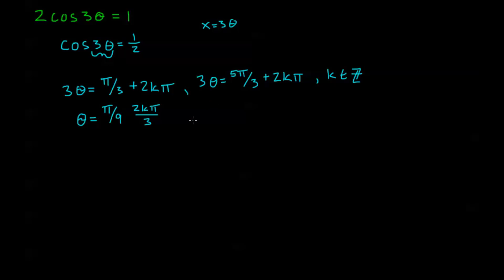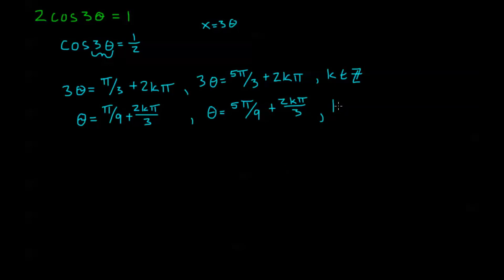I can do the same thing for the second equation: 3 theta equals 5 pi over 3 plus 2k pi. So theta equals 5 pi over 9 plus 2k pi over 3. And there we have it — this is our general solution, where k is an arbitrary integer.